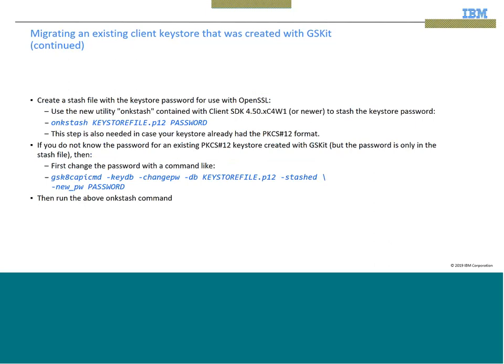The next step is to create a stash file with the keystore password for use with OpenSSL. Use the onkstash utility provided with CSDK and create a new password file for the newly converted keystore. This step is necessary even if you have an older keystore which is already in PKCS12 format. If you don't remember your password for your GSKit keystore, then you can use the command gsk8capicmd minus PDB changepw to change the password for your keystore.